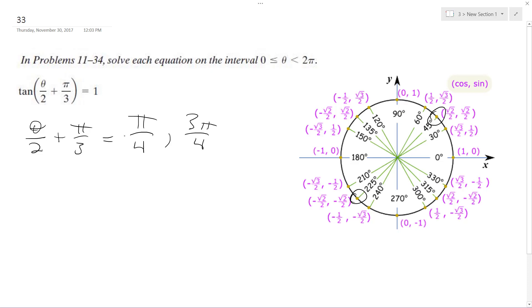So I'm going to subtract pi over 3 from both, so I end up with theta over 2 is equal to 3 pi over 12 minus 4 pi over 12, and 3 pi over 4 minus 9 pi over 12 minus 3 pi over 12.